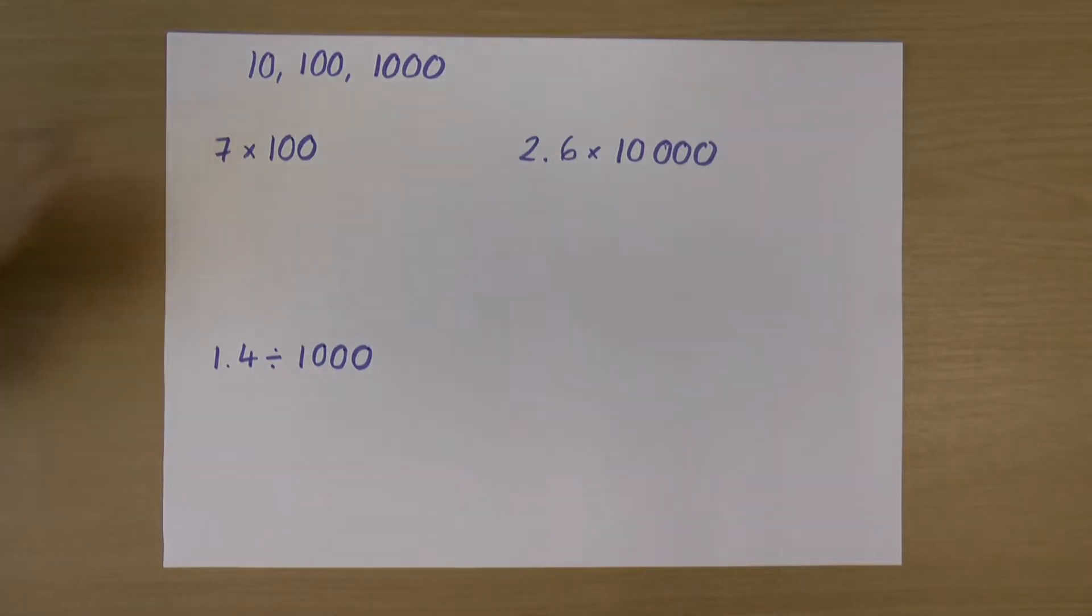So let's start off by doing a couple of multiplications. We've got 7 times 100. Now we could, of course, just pop this in a calculator, and perhaps that's the easiest way. But it's sometimes useful to know how to do this in your head without having a calculator with you.